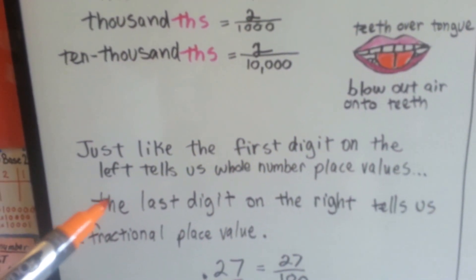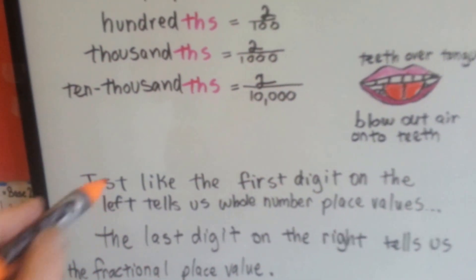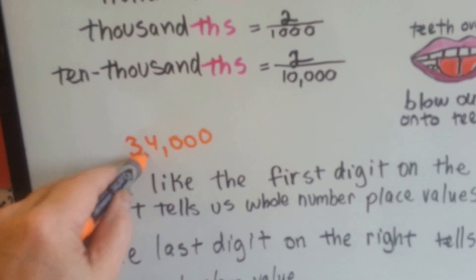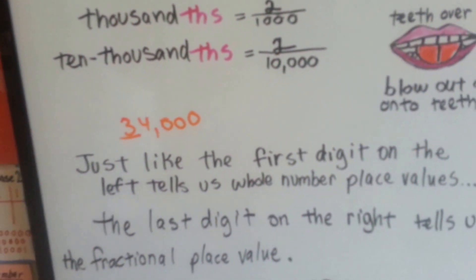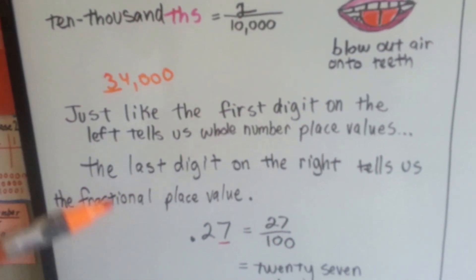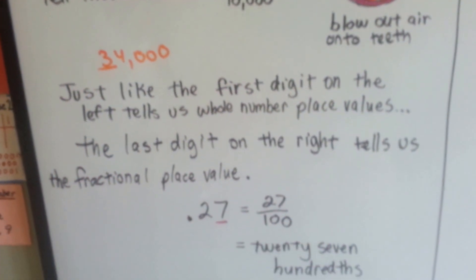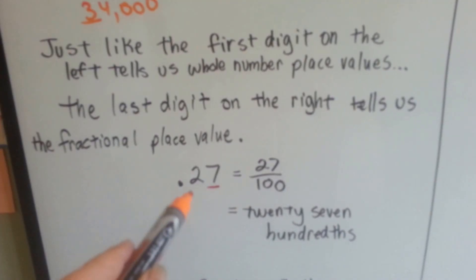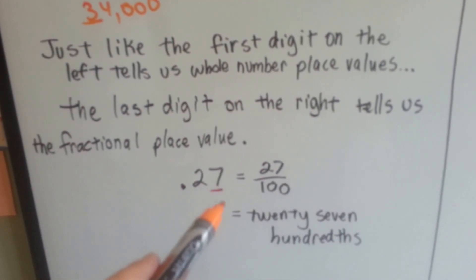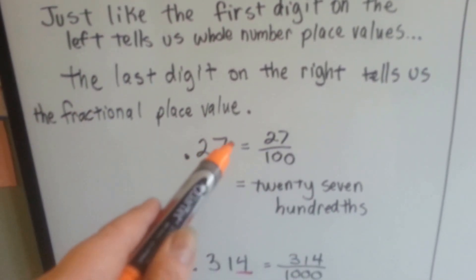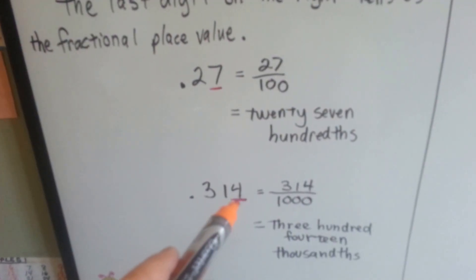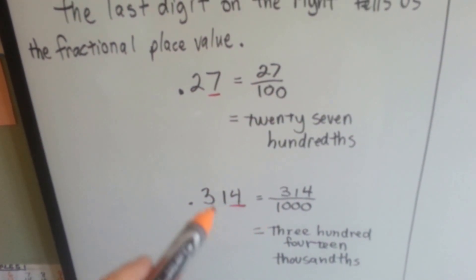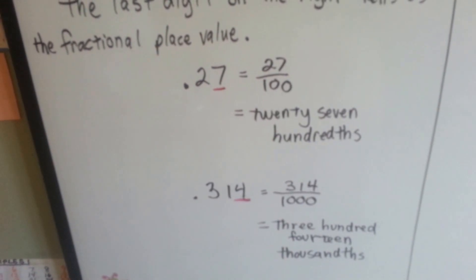Just like the first digit on the left tells us the whole number place value — like in 34,000, this three tells us we're in the ten-thousandths place — the last digit on the right tells us the fractional place value. So this seven is in the hundredths place, and we know this is twenty-seven hundredths. The four is in the thousandths place, so we know this is three hundred and fourteen thousandths.